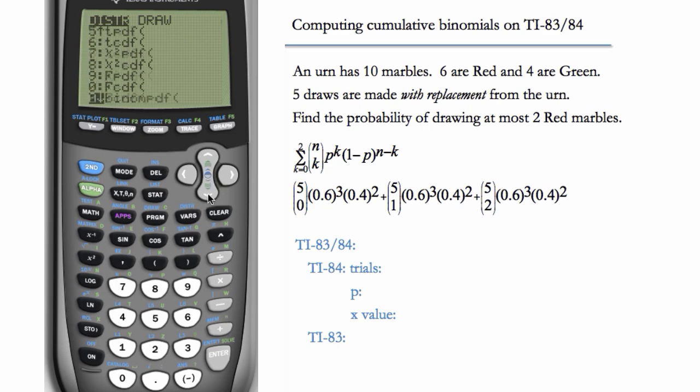We'll repeat, second vars, binompdf, trials is still five, p is still 0.6, but now our x value is one. And we get this.